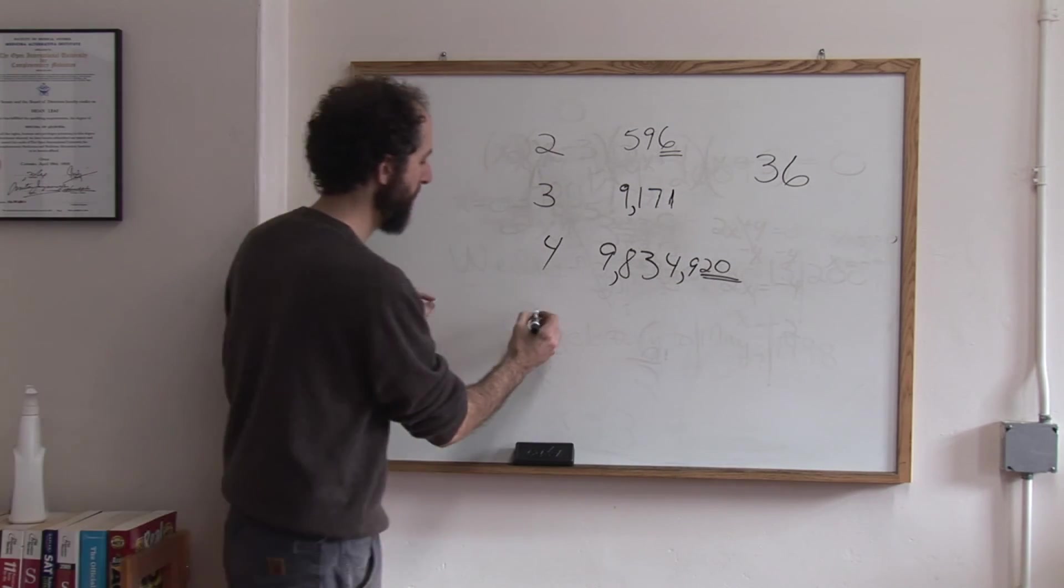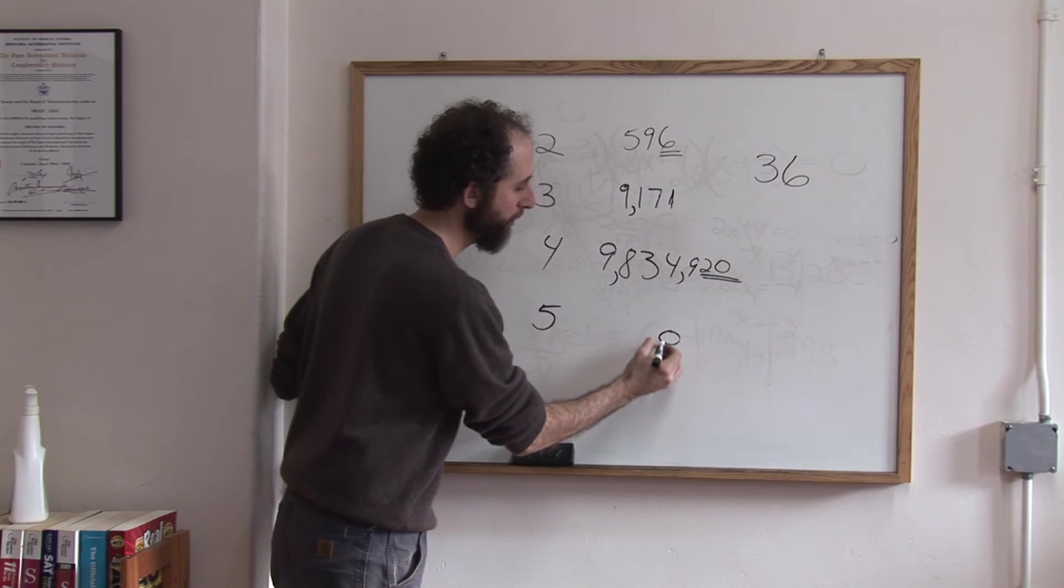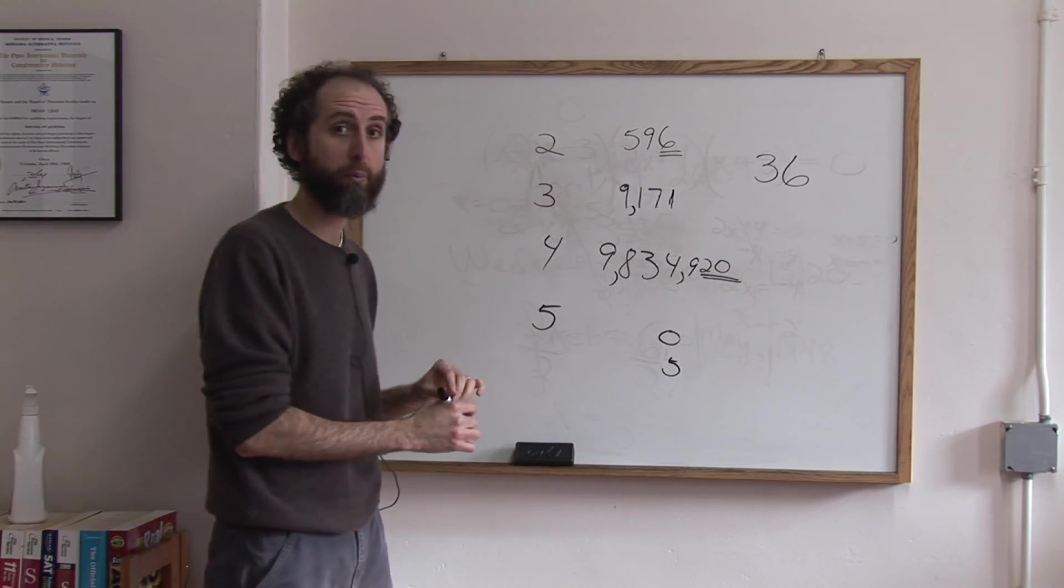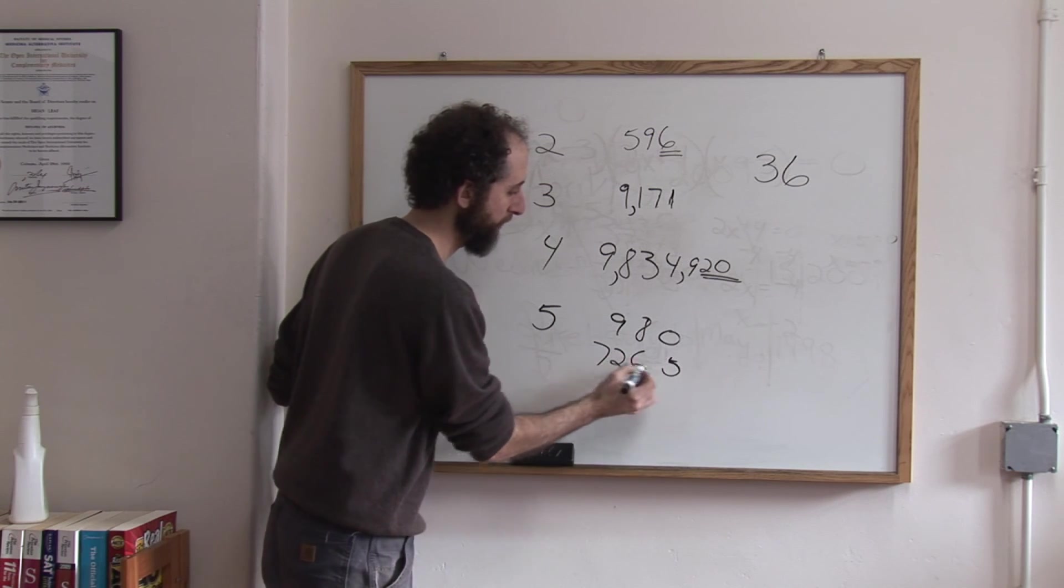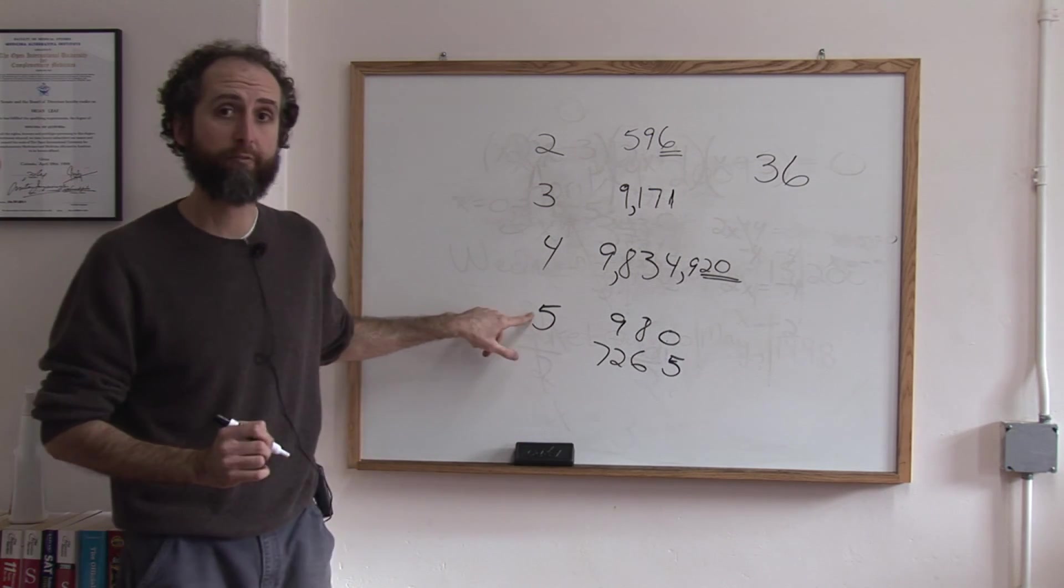Last one, 5. Any number that ends in a 0 or a 5 is divisible by 5, like the number 980, or 7,265. Because it ends in a 0 or a 5, we know it's divisible by 5.